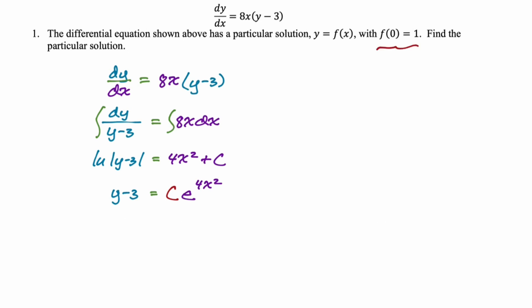Now we're going to solve for c by using the fact that f of 0 is 1. So we would get 1 minus 3 is negative 2 equals ce to the 0. So c is just negative 2.